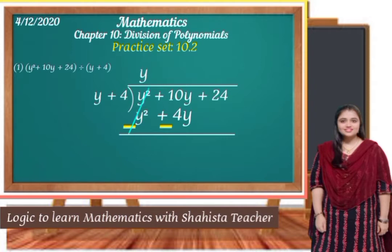10y minus 4y gives us 6y. We get 6y, and now 24 will come down. So here we have 6y plus 24.